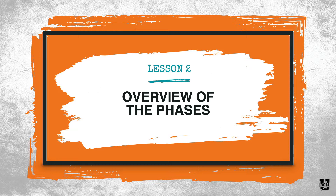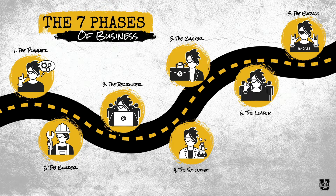But before we talk about individual phases in depth, we thought it was important to give you an overview of the phases and the order they come in. So the seven phases are: one is the planner phase, the second is the builder phase, the third is the recruiter phase, the fourth is the scientist phase, the fifth is the banker, the sixth is the leader, and finally, you reach the badass.